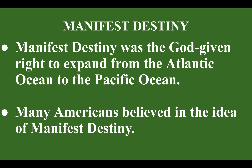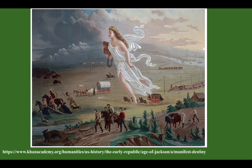Manifest Destiny was the God-given right to expand from the Atlantic Ocean to the Pacific Ocean. Many Americans believed in the idea of Manifest Destiny. You see a picture right here — a painting of Manifest Destiny — which means going west, westward expansion to the Pacific Ocean from the east. You can pause this video and look for any key points that stand out to you about this painting.